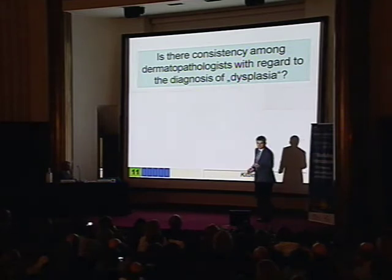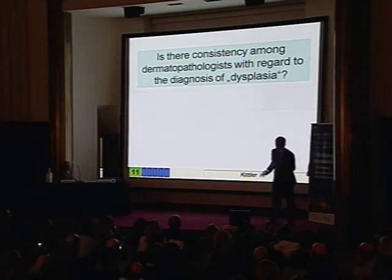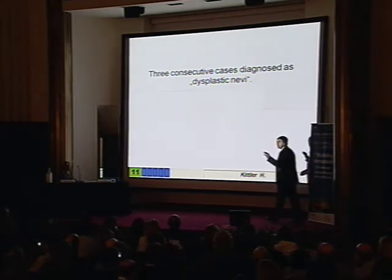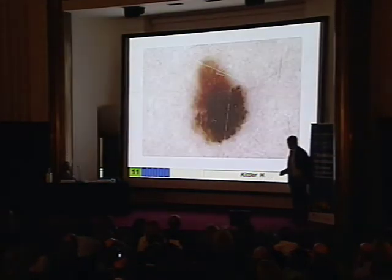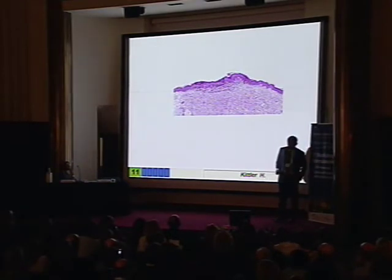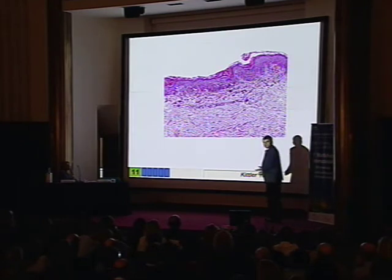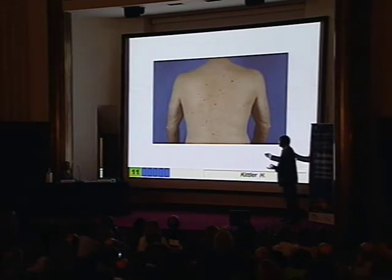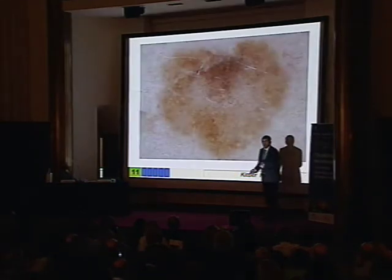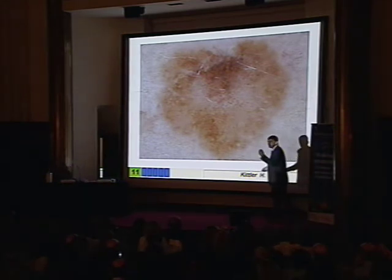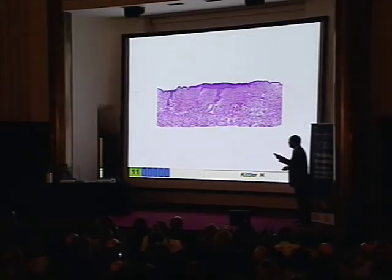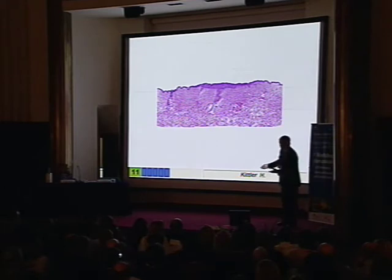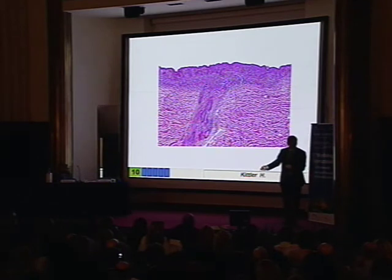Is there consistency among dermatopathologists with regard to the diagnosis of dysplasia or atypia? I'll show you three consecutive cases, all diagnosed as dysplastic nevus histopathologically. First case: clinically, close-up, dermatoscopically, histopathologically — here you can see the melanocytes, so this is called a dysplastic nevus. Second case: dermatoscopically it is atypical in the sense that you need to excise it to rule out melanoma — diagnostic uncertainty, not biologic uncertainty. The histopathology shows melanocytes going down the hair follicle, a sign of congenital type nevus — a superficial congenital nevus, also called dysplastic by dermatopathologists.